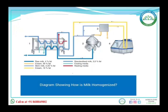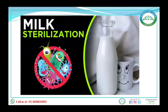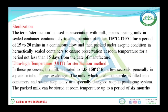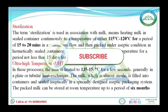See the diagram showing how milk is homogenized. The homogenizer is a machine used to disintegrate fat globules at a temperature of 65 degrees Celsius. Next is milk sterilization. In sterilization, milk is heated in a sealed container continuously to a temperature of 115 to 120 degrees Celsius for about 15 to 20 minutes, then packed in aseptic (germ-free) conditions so the milk can be preserved at room temperature for not less than 15 days. UHT sterilization involves heating milk at 135 to 150 degrees Celsius in a plate or tubular heat exchanger, then filling into sealed germ-free containers for storage of at least six months.